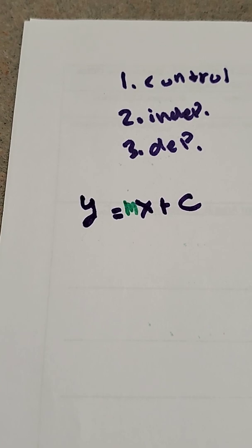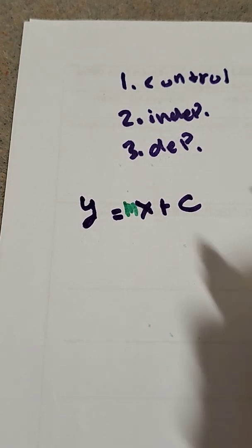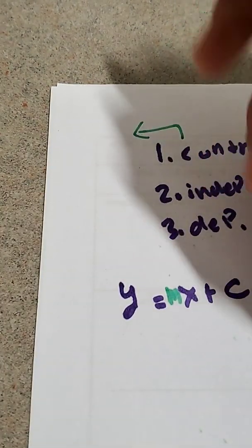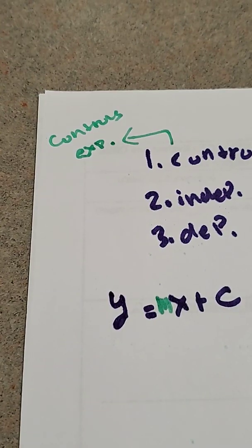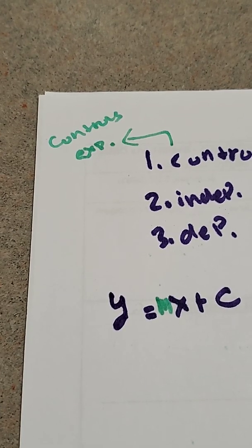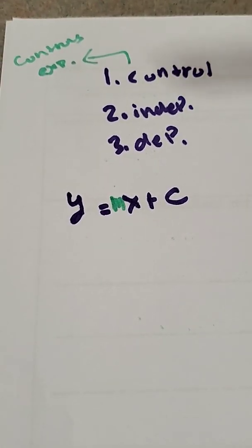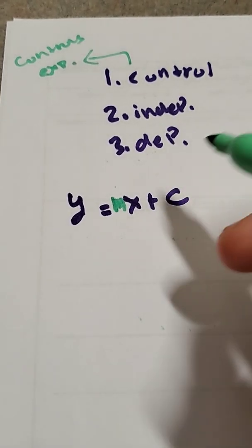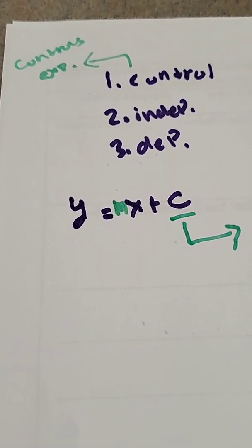When you hear 'control variable,' the first thing that might come to mind is that it controls the experiment, but that's not the case. A control variable stays the same — it's a constant. The way I memorize it: control variable starts with a C, and C is a constant, so it stays the same the whole time. In this equation, C is the constant.